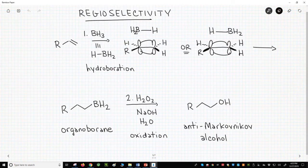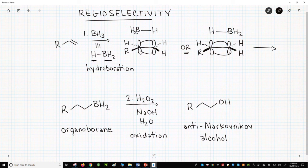In the hydroboration, BH3 adds to an alkene. A hydrogen goes on one carbon, and a BH2 goes on the other carbon. This addition happens in one step. There is no carbocation intermediate.